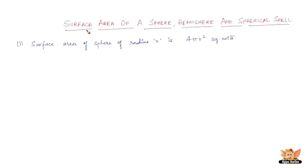In this video, let us look into the formulas of surface area of a sphere, hemisphere, and spherical shell. The first one states the surface area of a sphere of radius r is 4 pi r square square units, where pi is the constant 22 by 7 and r is the radius.